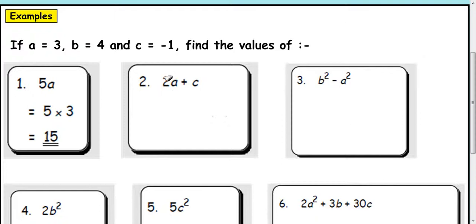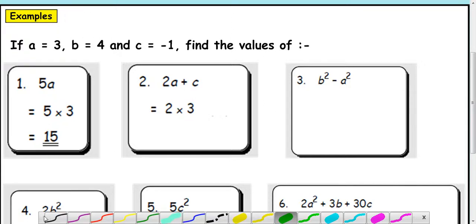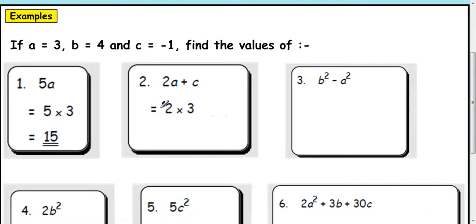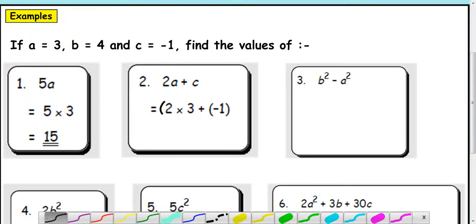Moving on to 2. We've got 2A plus C. Now I know that this means 2 times A and then add on C. So 2 times A, what is A? A is 3. So it's 2 times 3. And I would put that in brackets. Any multiplication where you've got something else to do, try to put brackets in. And then you add on whatever C is. So I'm adding on negative 1.